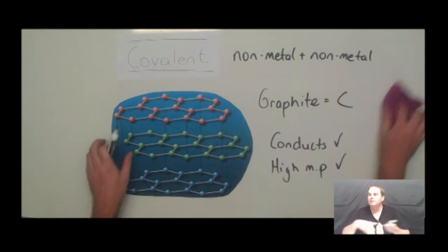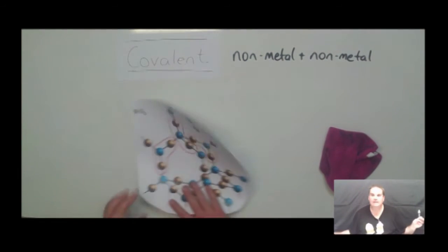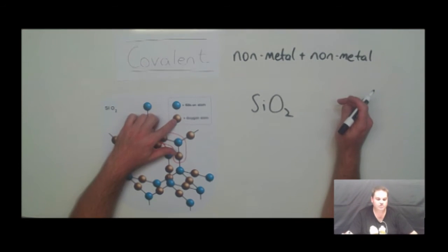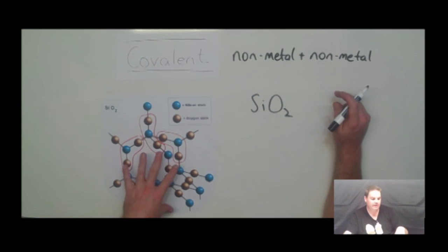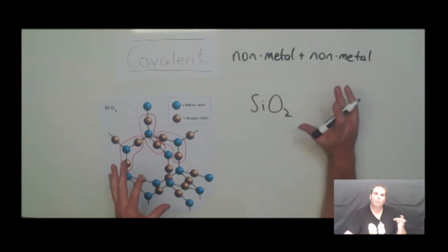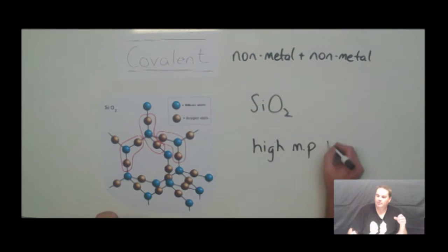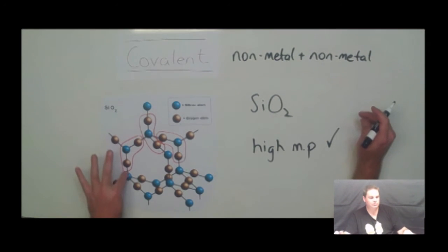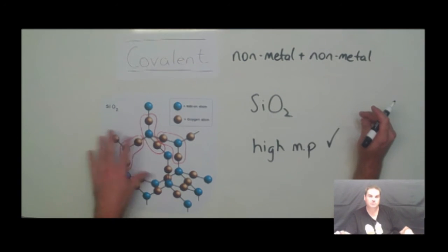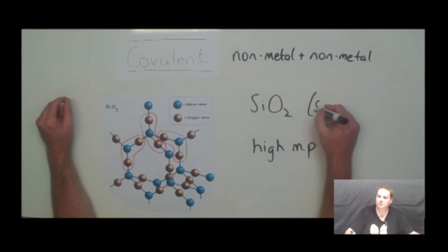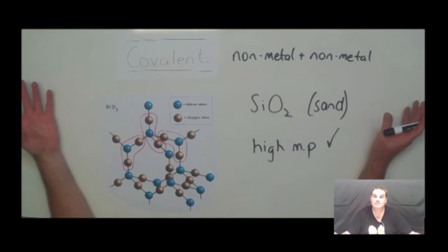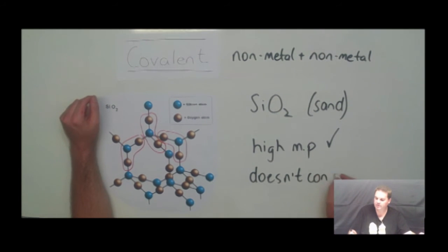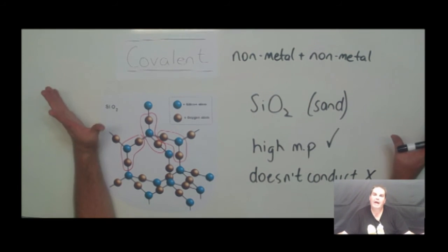The other covalent substance with a big three-dimensional structure is silicon dioxide (SiO2). The silicons and oxygens form a big three-dimensional structure. Because there are lots of bonds to be broken, it has a really high melting point. For every one silicon, there are two oxygens, giving the ratio one to two — which is why it's SiO2. The common name for silicon dioxide is sand. It has a very high melting point. However, there are no free electrons through it, so it doesn't conduct electricity — which is a good thing because you don't want to be standing on the beach having it conduct electricity.